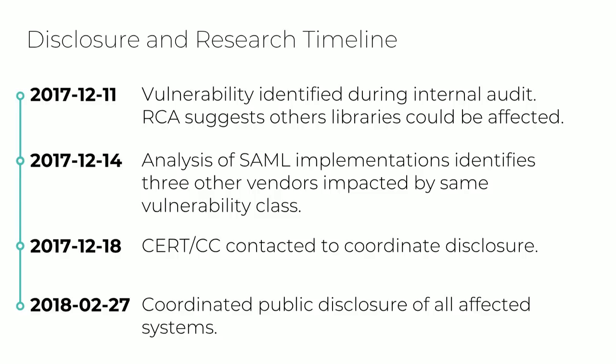This is the timeline of our findings and research. I identified the first issue during an internal audit last December. Three days after that, while sorting out what a good patch would look like for this seemingly new vulnerability, we had identified three other vendors that were affected. Since we were dealing with multiple affected vendors, we opted to work with the CERT/CC group to coordinate disclosure across these vendors as well as other common SAML IDPs and SPs. Coordinated public disclosure was done around two months after the initial contact to CERT/CC.